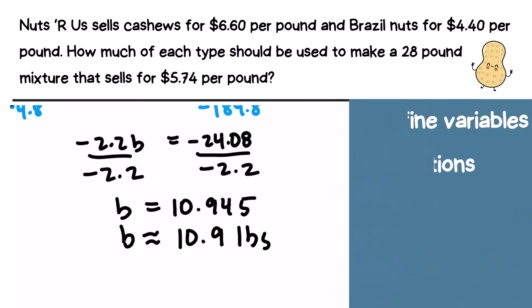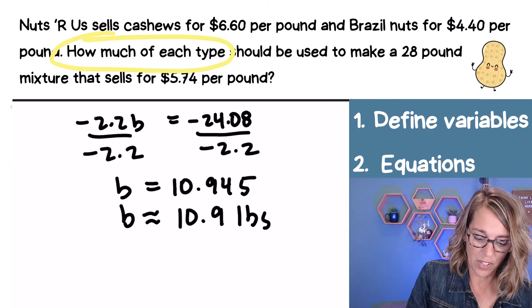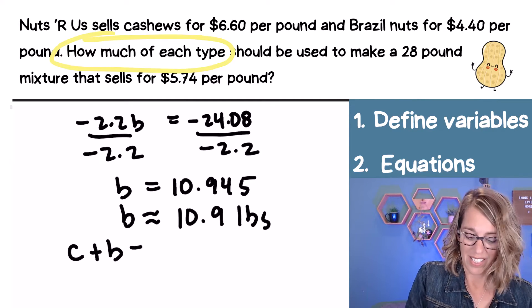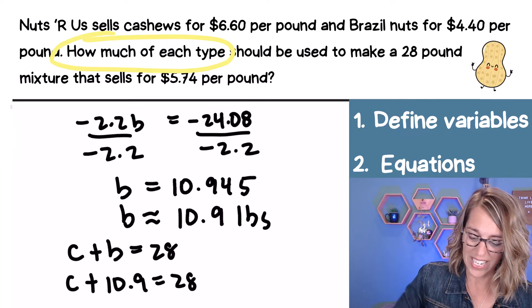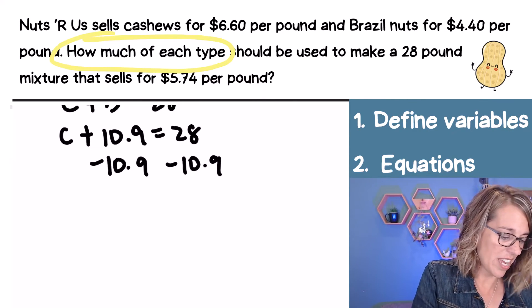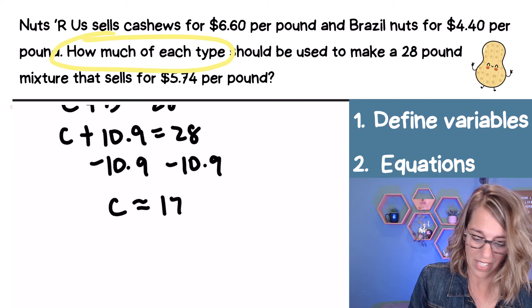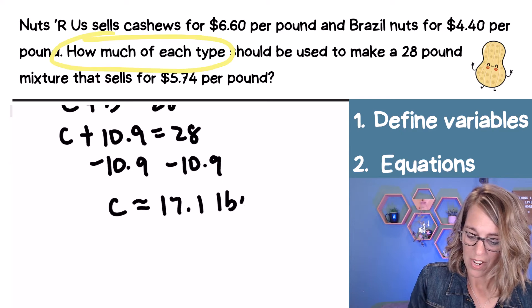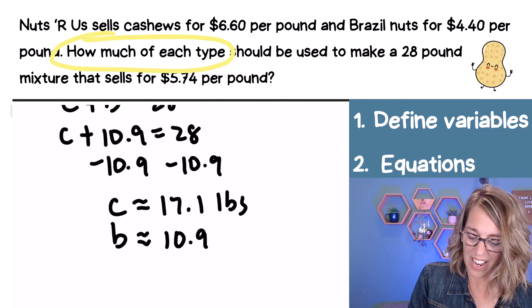So I found B, but if I go back to my instructions, I need to answer the question. And the question says how much of each type. So I know that I need 10.9 pounds of those Brazil nuts, but I also need to figure out how many pounds of cashews. If I go back up to my original equation with the C and the B in it, C plus B is equal to 28 pounds. So C plus 10.9 is equal to 28. I'm going to go ahead and subtract 10.9 from both sides, 28 minus 10.9. And we get C is 17.1 pounds. So I've got 17.1 pounds of the cashews and of the Brazil nuts. We've got 10.9 pounds.